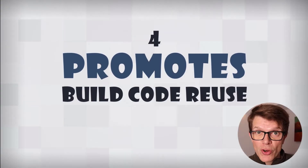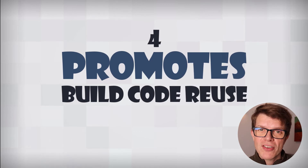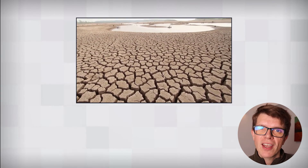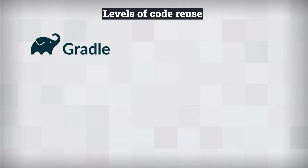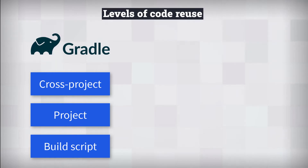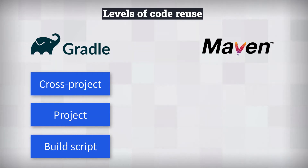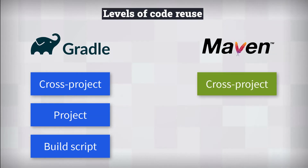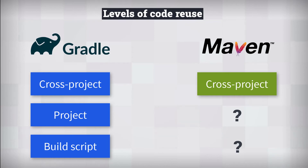Gradle encourages you to treat your build code like production code — in other words, keep it DRY. Code reuse in Gradle happens on three different levels: the build script, the project, and cross-project. Which level you choose depends on the amount of reuse required. In Maven, there's only one level of reuse — cross-project — which means creating a Maven plugin. While sometimes helpful, we don't always want the overhead of maintaining a separate project, especially when the build logic applies to one project only.